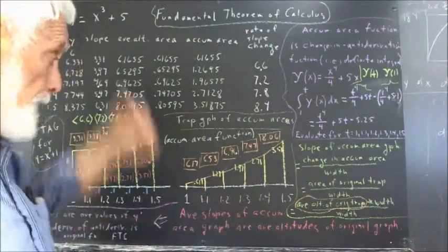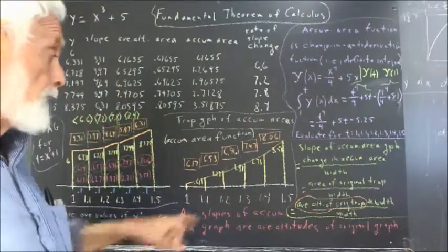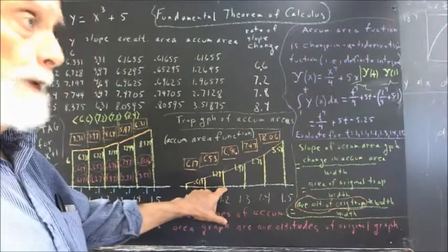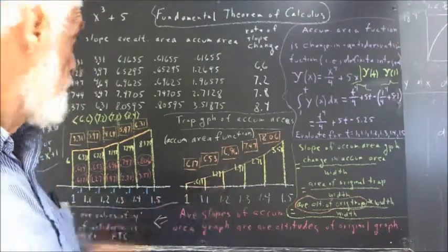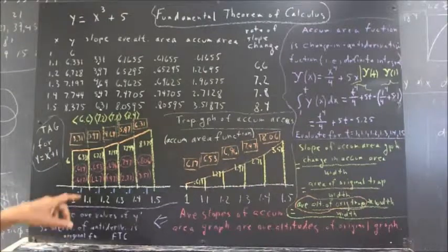So what's the simple explanation? Well, the difference between two of these accumulated areas is just the area of the corresponding trapezoid over here.